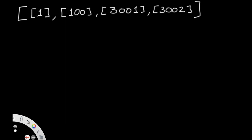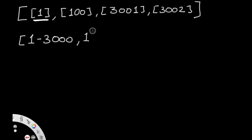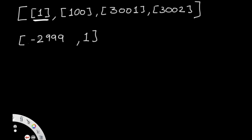Let's go to the sketchbook and look at this. In the beginning, we have a ping made at one millisecond. The range for this is one minus 3000, which is negative 2999, all the way up to the value one inclusive. The value one falls in this range, so the count is going to be one, since we were able to make one request.